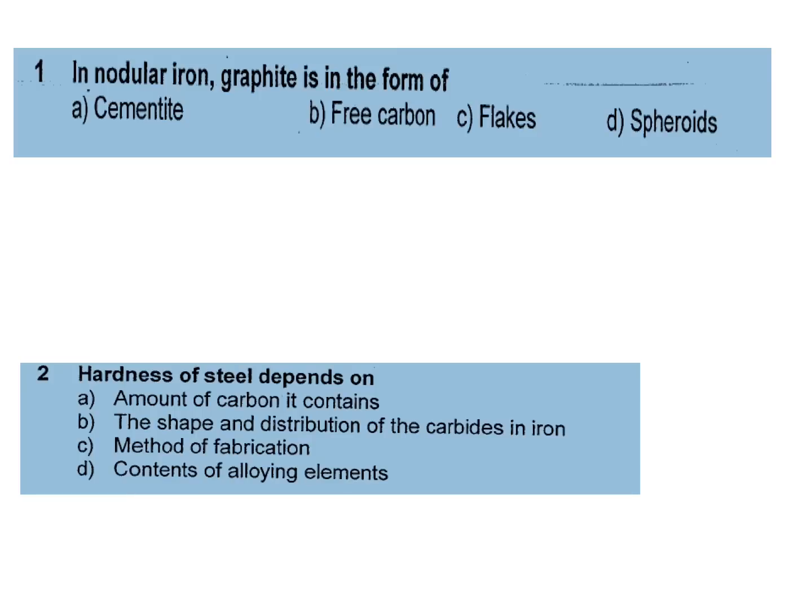Question 1: In nodular iron, graphite is in the form of a) Cementite, b) Free carbon, c) Flakes, d) Spheroids. Its answer is spheroids.